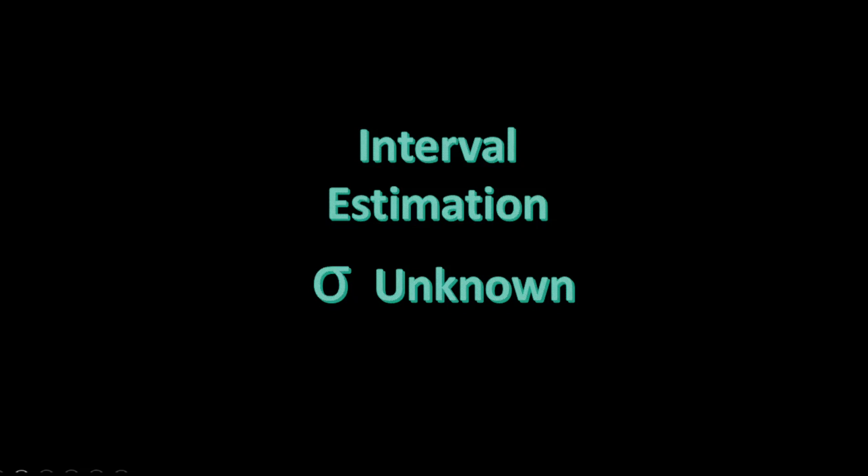Welcome to this tutorial on interval estimation for the mean when sigma is unknown. In the last tutorial, we discussed how to create an interval around the mean when sigma is known. However, in many cases we do not have a known process or historical data to determine the true standard deviation sigma, and therefore we have to use sample data to estimate both the mean mu and the standard deviation sigma. These types of cases are referred to as sigma unknown cases.